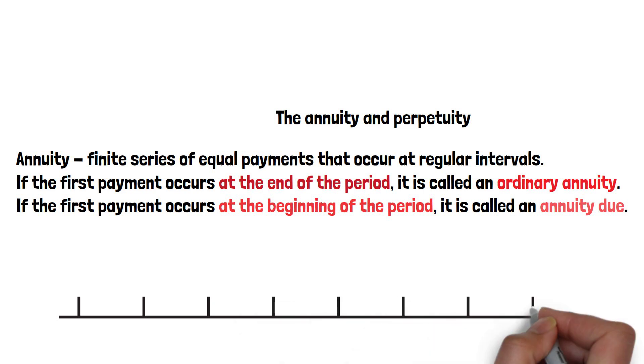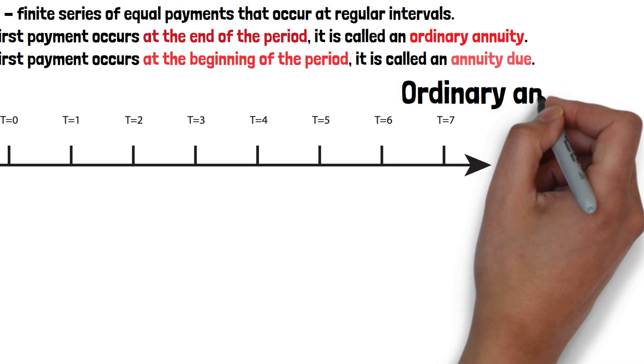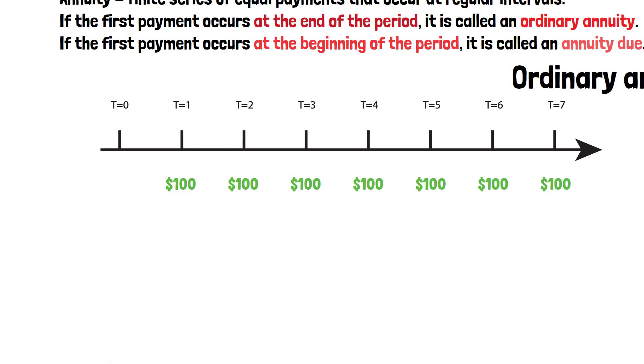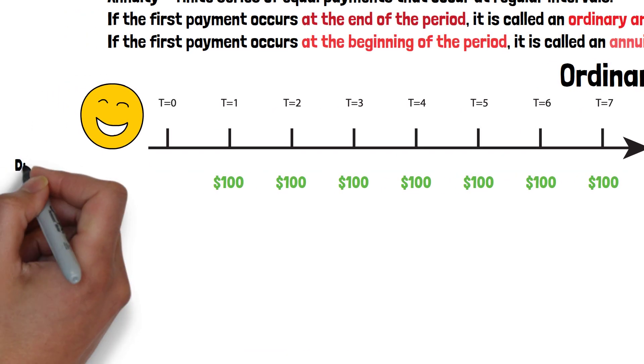Let's take a look at an example. In this example, we are using ordinary annuity where the payment happens at the end of the period. This person is very happy to receive $100 for 7 years.